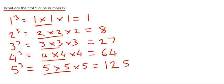So there you have it. Our first five cube numbers are 1, 8, 27, 64, and 125.